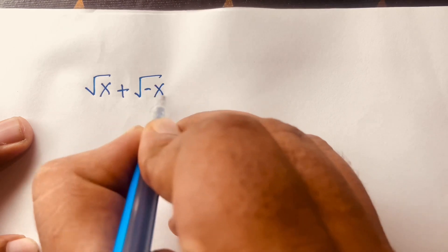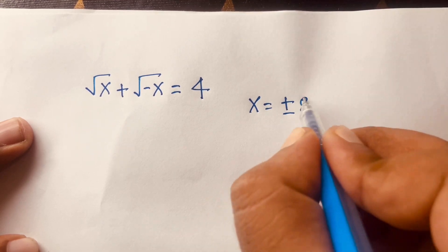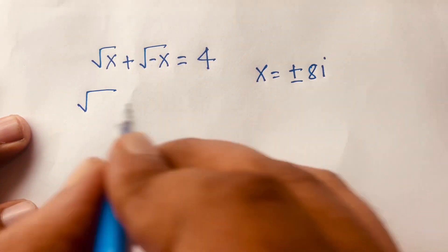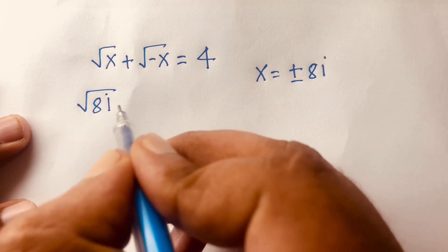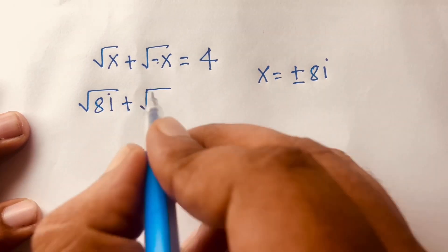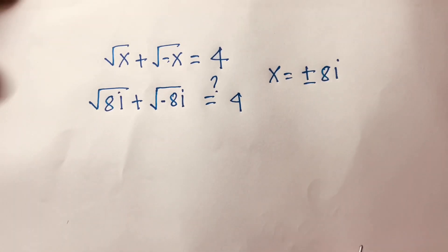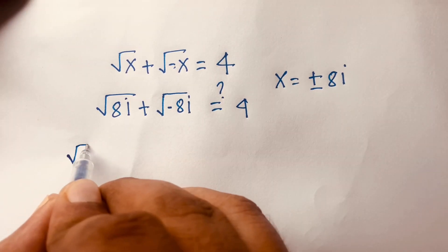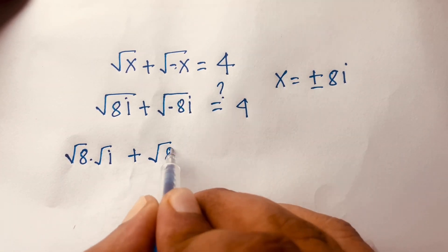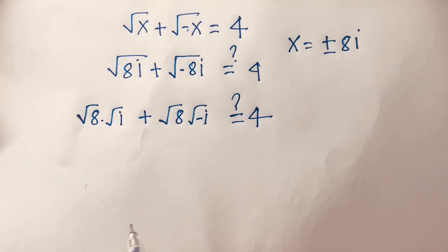Now let's verify. We check that square root of x plus square root of minus x equals 4, with x equal to plus or minus 8i. Putting x equal to plus 8i, the expression becomes square root of 8i plus square root of minus 8i, which equals square root of 8 times square root of i plus square root of 8 times square root of minus i, and this should equal 4.